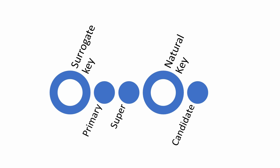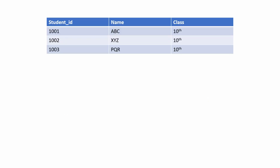Before we understand the types of keys and their differences, let's understand what a key is. A key is a column or set of columns using which you can identify each record in a table uniquely. For example, each student in a class has their own identification number. So for the student table, student ID will be a key.